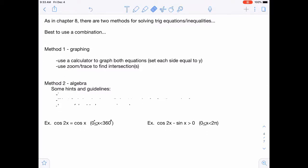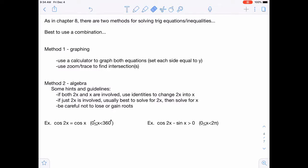If you're using algebra, and you should use algebra for all of these, whether you graph or not, I do have some hints and guidelines specific to this section, and all the ones from chapter 8 would also still apply. So the first thing that you want to notice in this section, if you have both a 2x and an x, you probably want to use identities to change the 2x into an x so that you don't have a combination of the two. If you just have 2x, it's often best to solve for 2x and then solve for x. And you want to always be careful not to lose or gain roots.